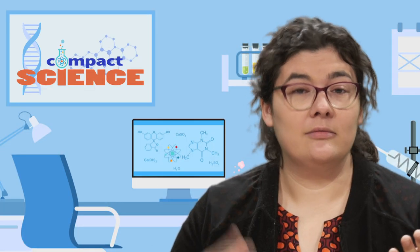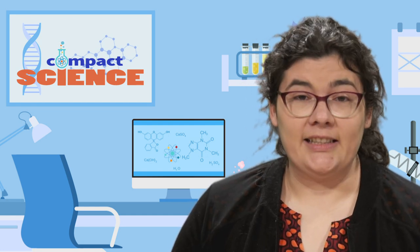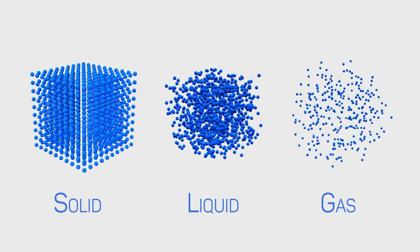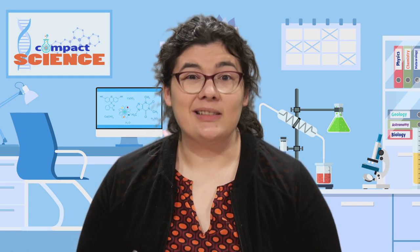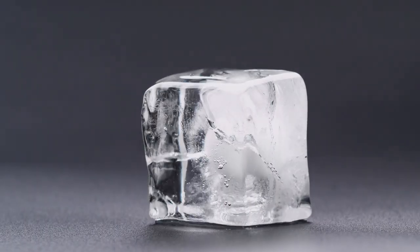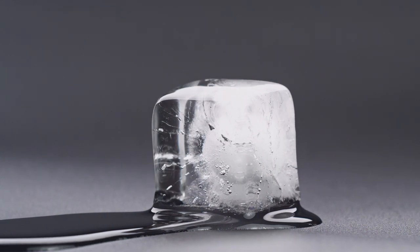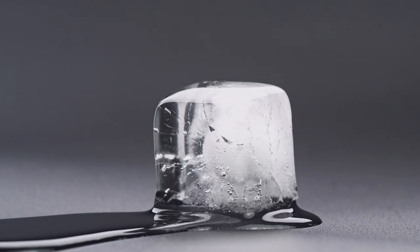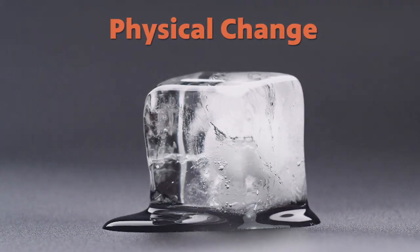Sometimes matter can change, and there are two types of changes: physical and chemical. In a physical change, the matter changes state. There are many different states of matter, but we usually focus on three: solid, liquid, and gas. When a physical change happens, it doesn't change the atoms or molecules, and those changes are usually reversible. What happens when you melt some ice? You get water. Take that water and put it into the freezer and it'll go back to ice. It doesn't change the molecules, so it's a physical change.